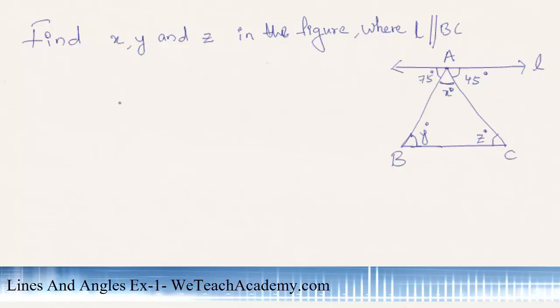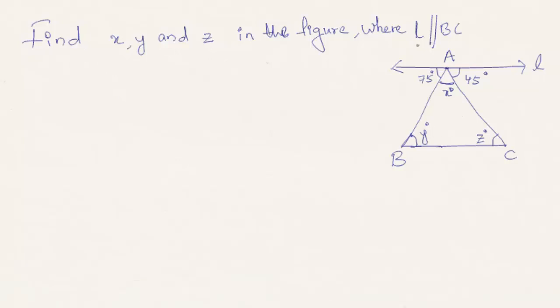Hey guys, welcome to vteachacademy.com. Now let us find x, y, and z in the given figure where line L is parallel to BC. If you observe in this figure, these angles—75 degrees, x degrees, and 45 degrees—lie on a straight line.